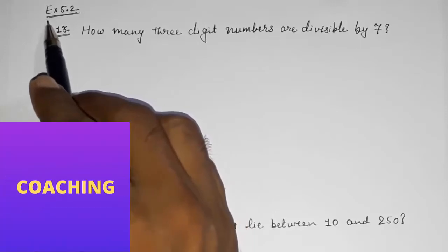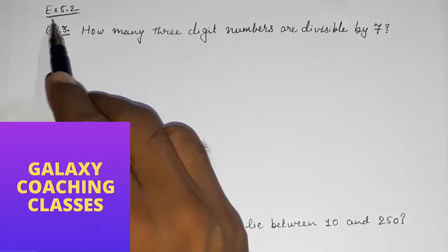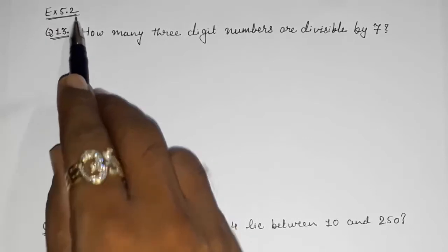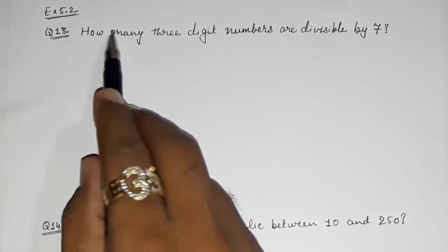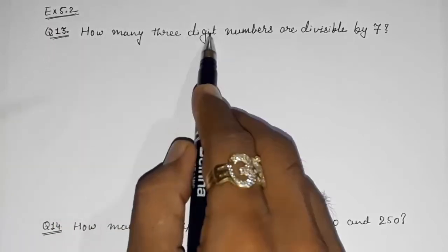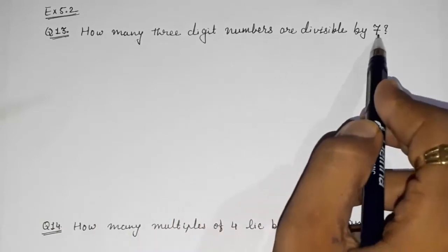Hello friends, today we are going to solve CBSE class 10th math exercise 5.2 question number 13: How many 3-digit numbers are divisible by 7?